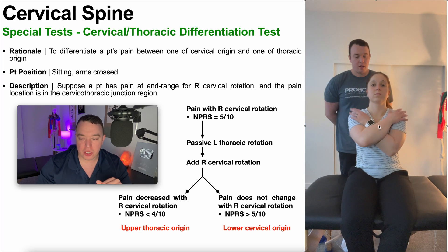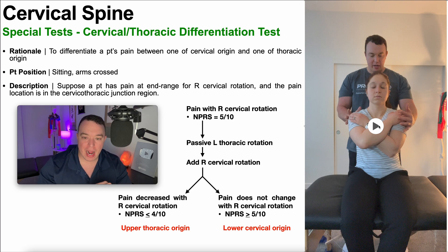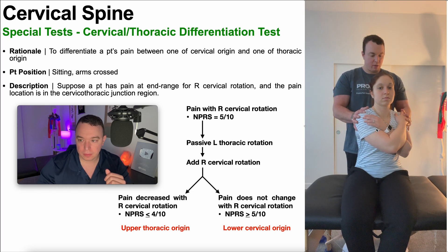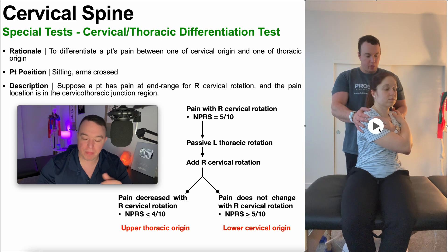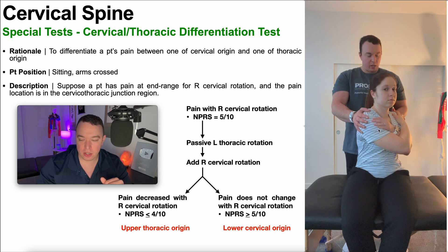Once we've assessed the pain rating and how far they need to rotate their neck to reach that point, we're then going to have them cross their arms. Since it's right cervical rotation that causes the pain, we're going to induce some left thoracic rotation — the thoracic rotation is always in the opposite direction and it's passive. So I'm going to passively move her into left thoracic rotation, and then from there she's going to rotate her neck to the right by about the same amount. If it was 60 degrees to get to pain at first, she's going to rotate it 60 degrees again.